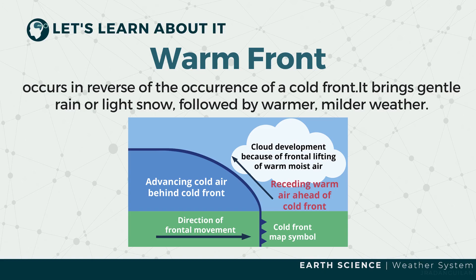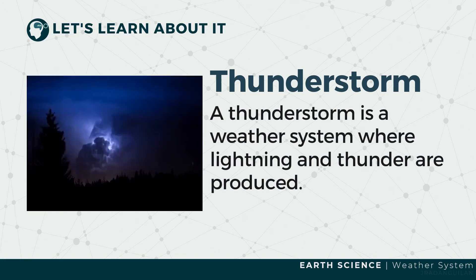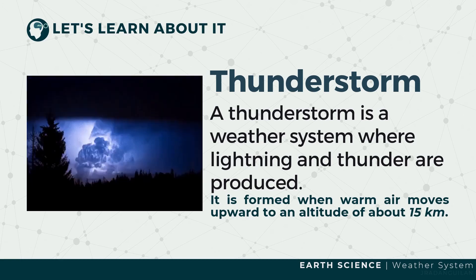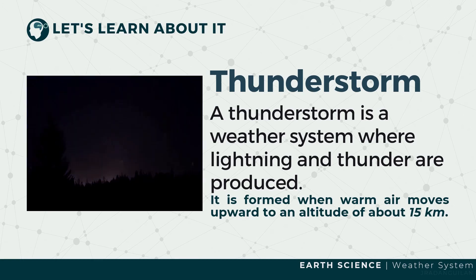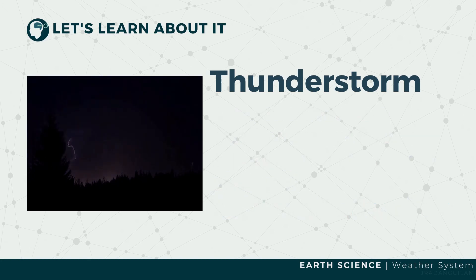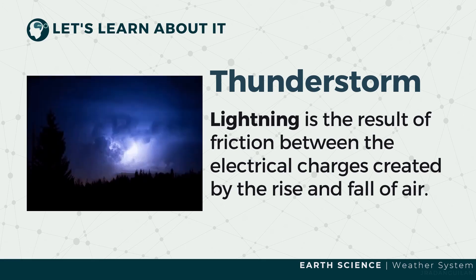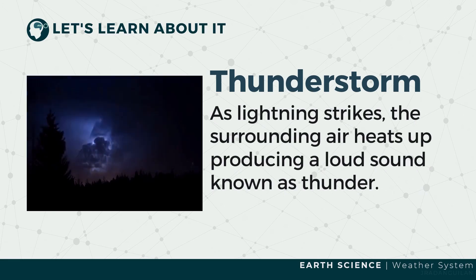Weather systems can be observed in a relatively small area. A thunderstorm is an example of a weather system where lightning and thunder are produced. It is formed when warm air moves upward to an altitude of about 15 kilometers. It is accompanied by strong winds and heavy rain. When the sky darkens, cumulonimbus clouds are formed that signal the formation of thunderstorms. Lightning is a result of friction between the electrical charges created by the rise and fall of air. It happens inside the clouds or between clouds and the ground. As lightning strikes, the surrounding air heats up, producing a loud sound known as thunder.